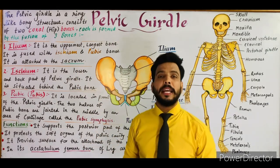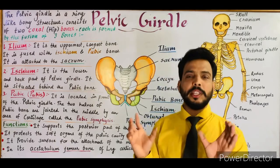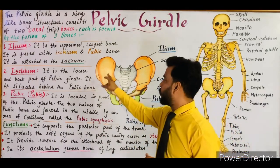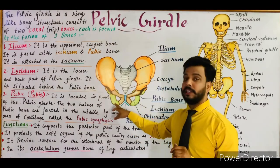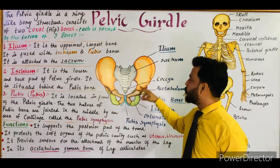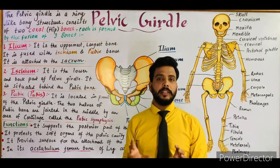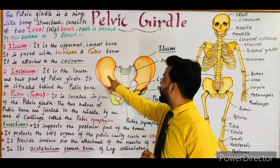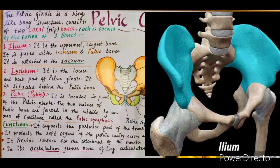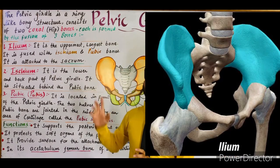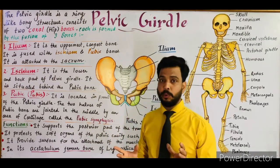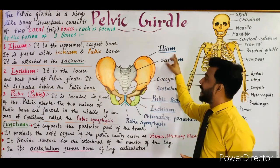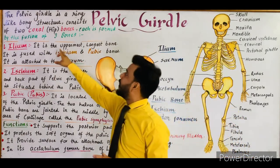Each half of the pelvic girdle is made up of three bones. As you can see, there are three different colors — orange, brown, and green. The first one is the ileum. These two orange-colored bones are known as the ileum bones. They are the largest bones and form a large area of the pelvic girdle — the uppermost and largest bones of the pelvic girdle.